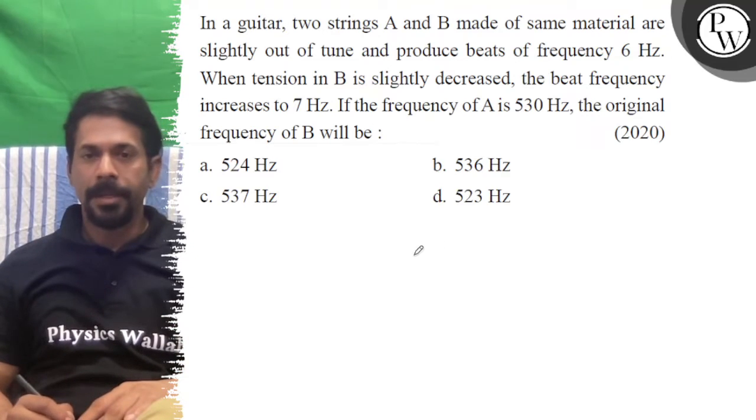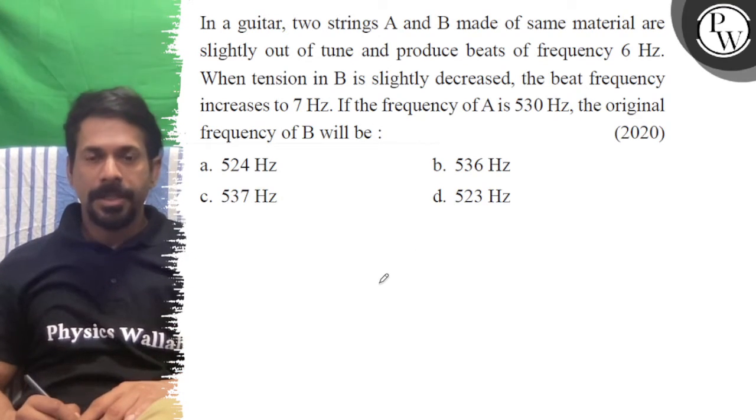Hello, let's see the question. In a guitar, two strings A and B are made of the same material, are slightly out of tune and produce beats of frequency 6 hertz.